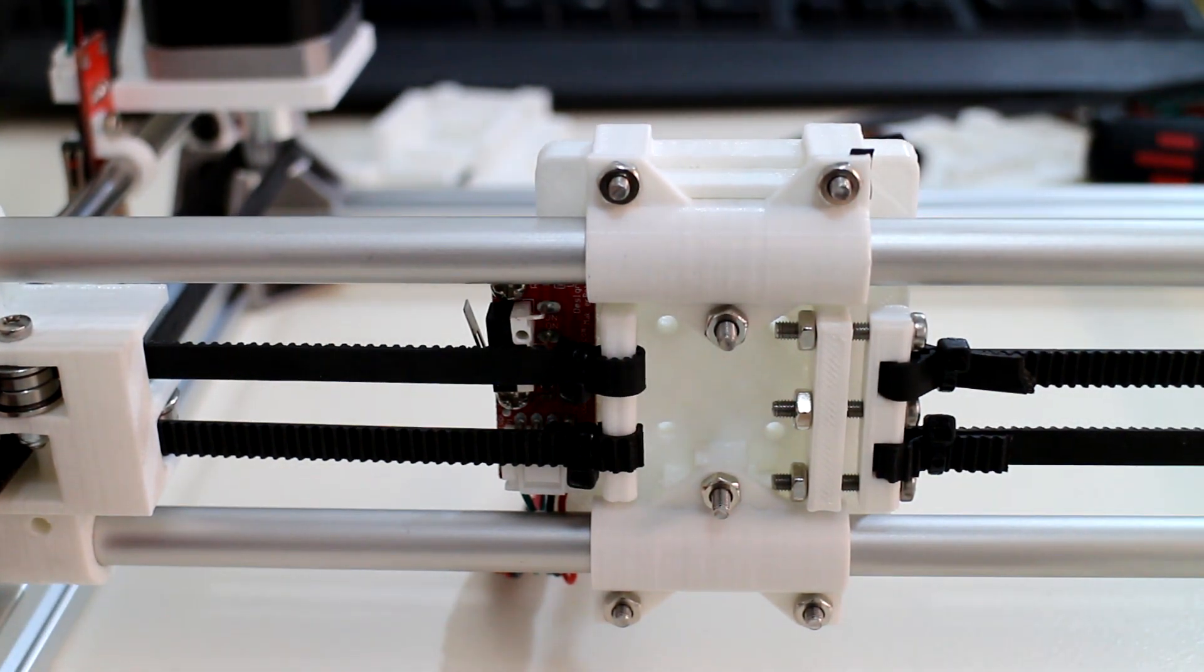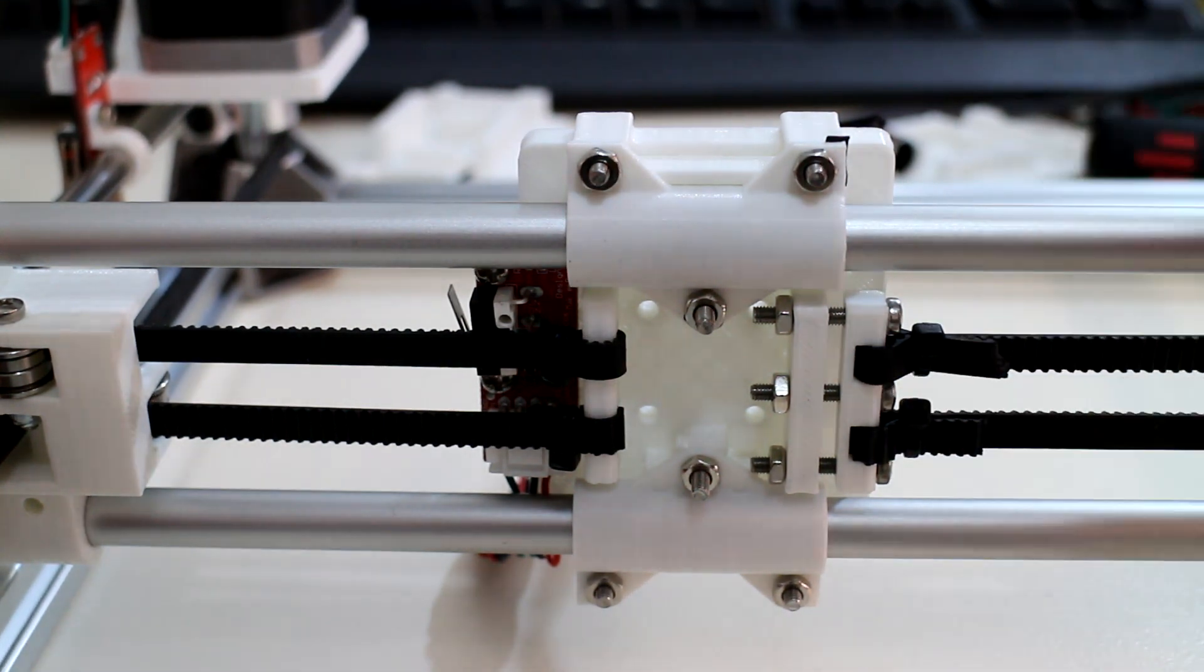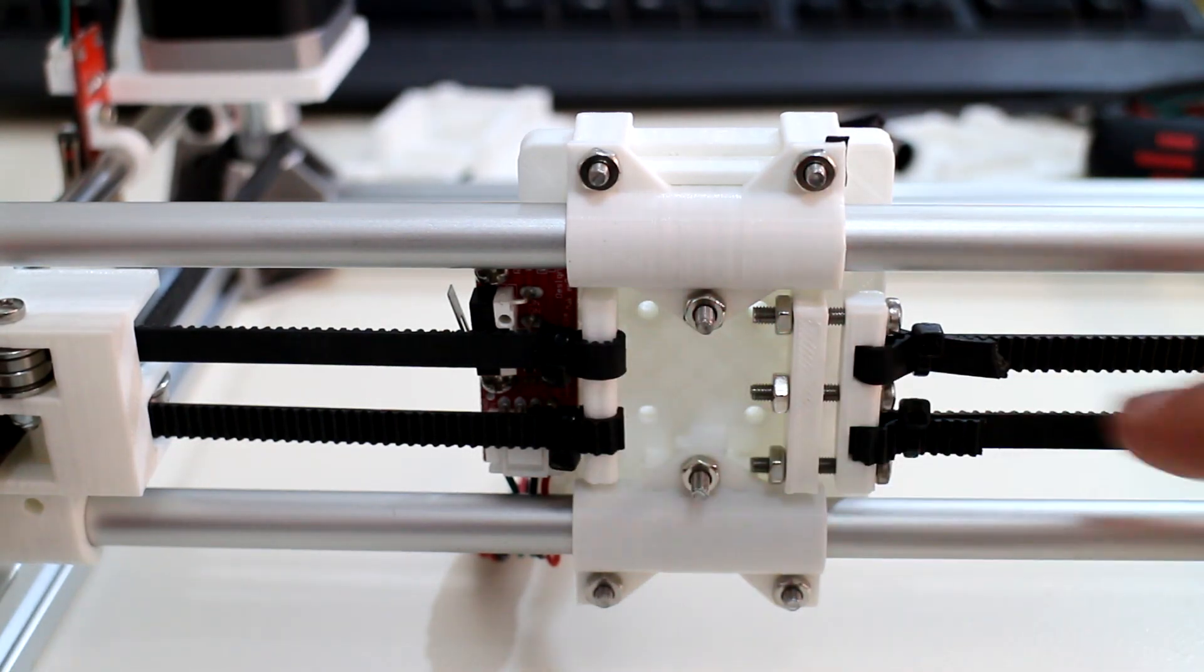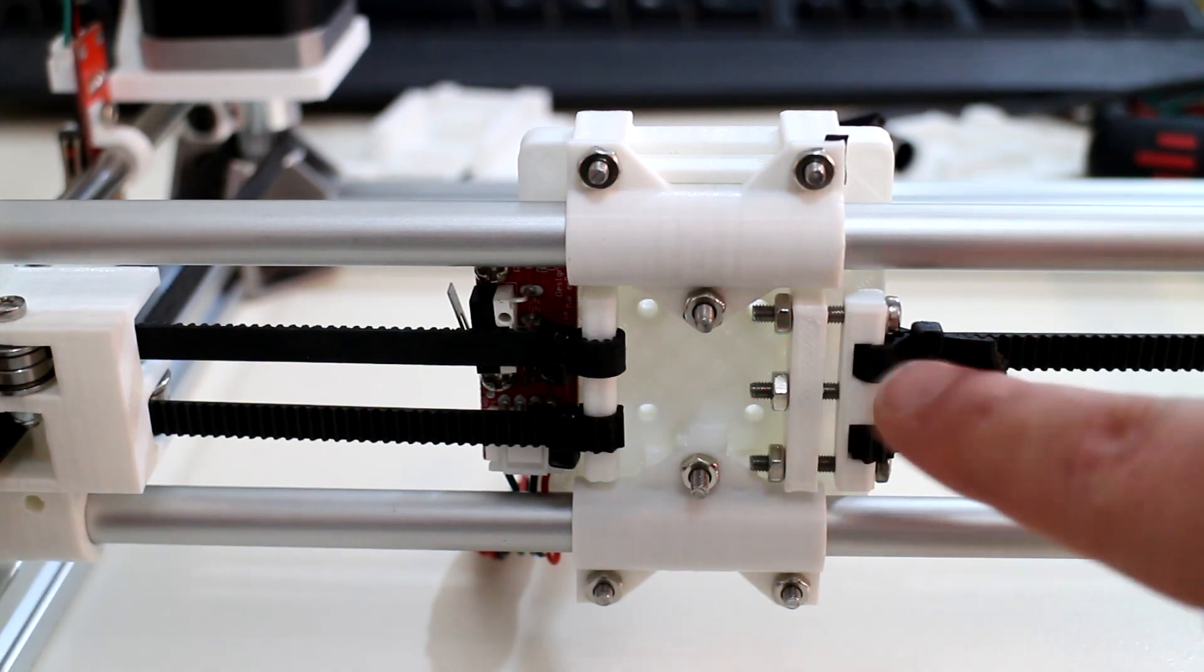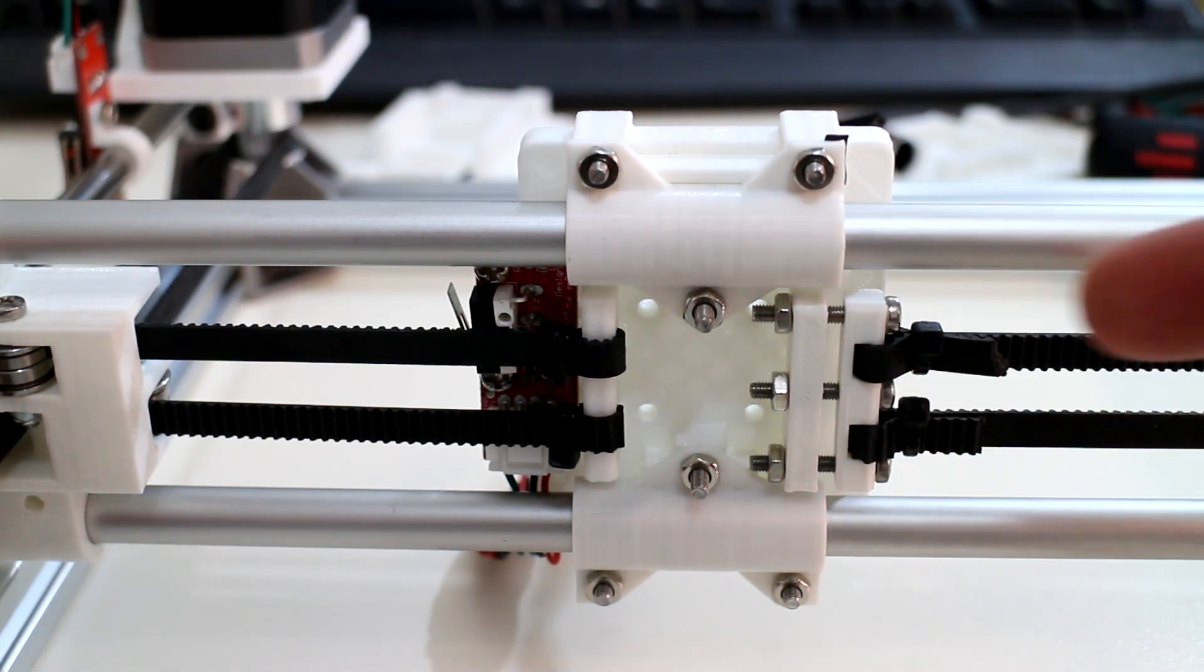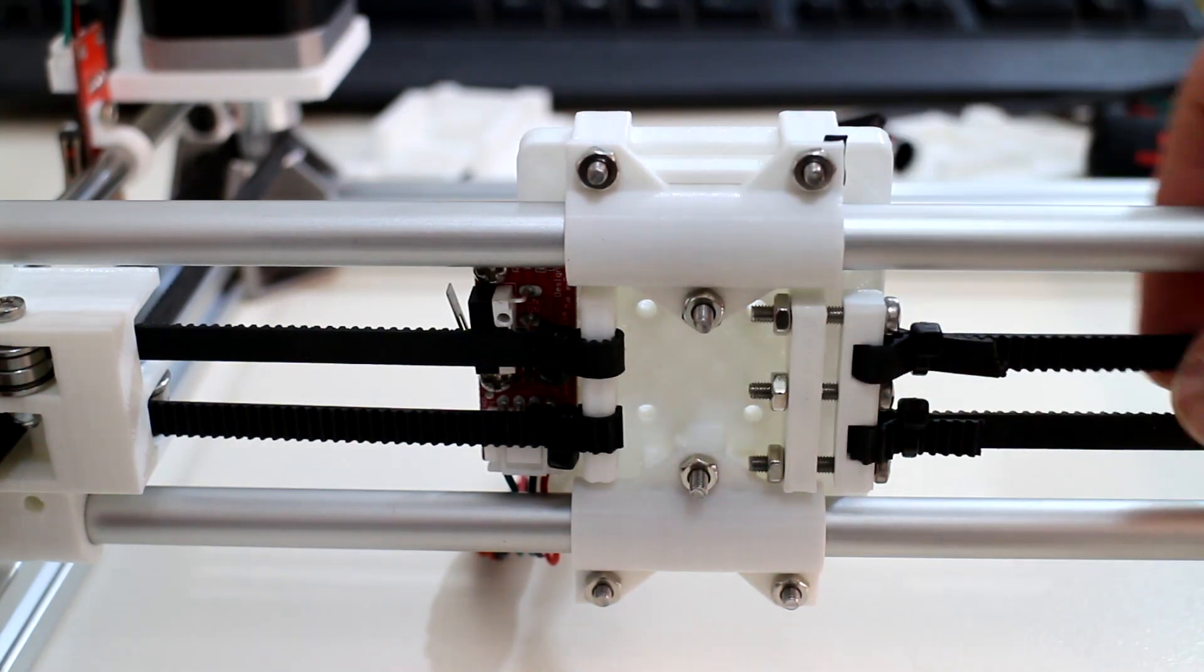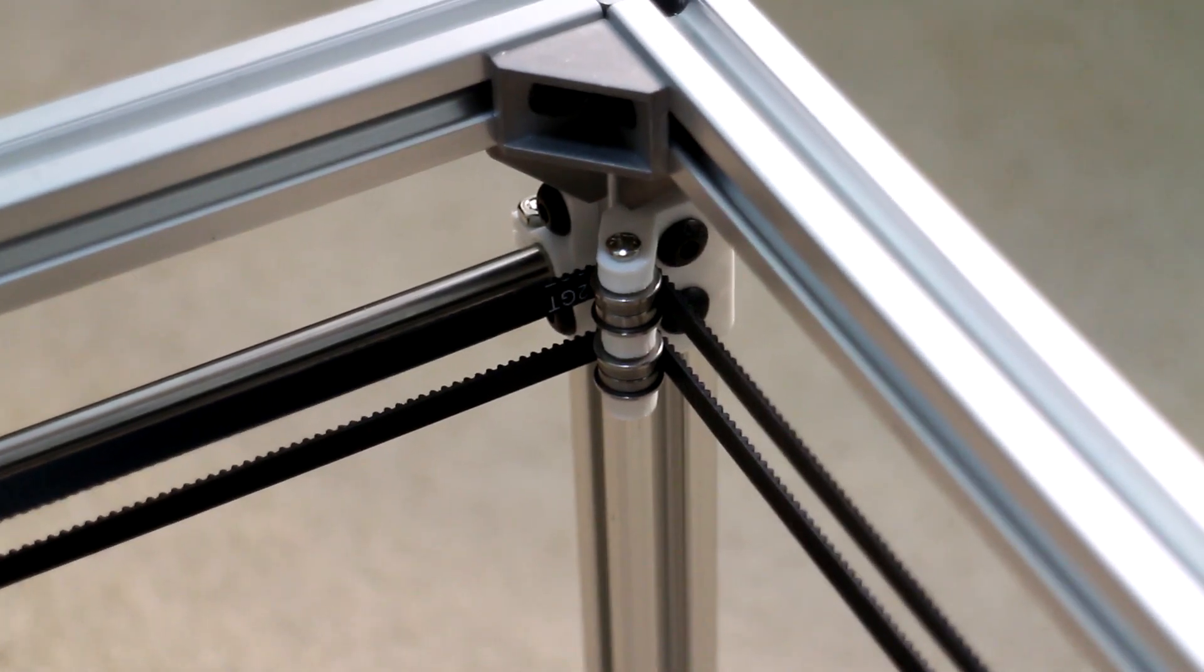So wherever that is, it'll home there. That also means that you can home the X-axis independent of the Y-axis, which some CoreXY printers have to home the Y-axis first before homing the X-axis. You can also see the way that I've changed the belt tightening system. On the left, the two belts simply cable tie directly on, but on the right we have three screws - say three 20 millimeter M3 screws. You cable tie the other end of the belts to this part and then screw in, and that'll tighten your belts.